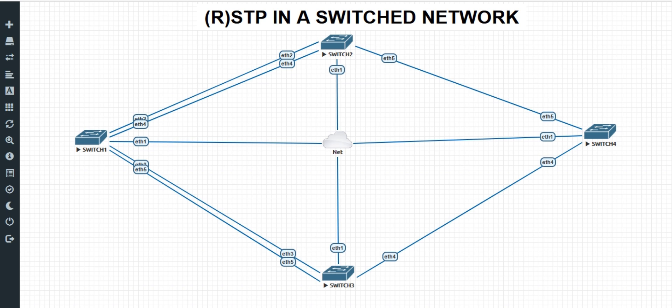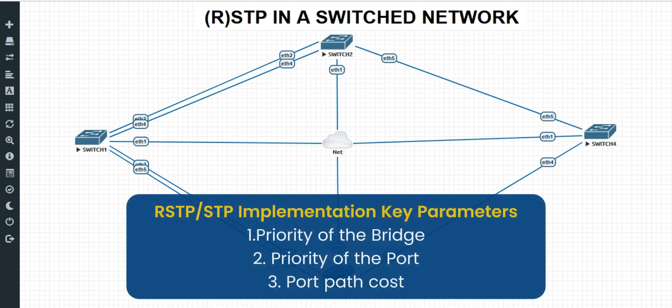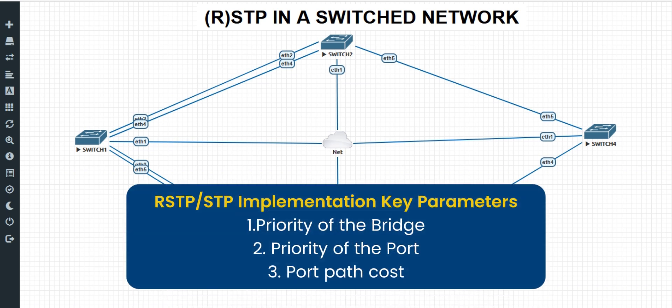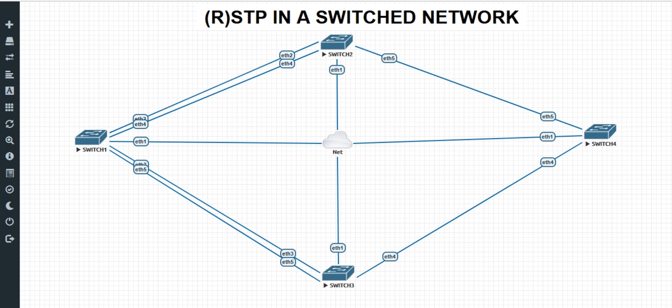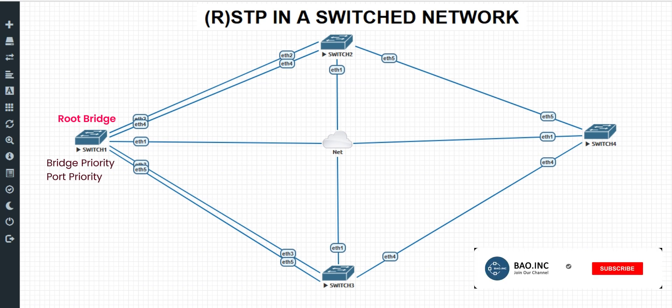To implement either RSTP or STP on your network, you have to choose a root bridge. There are three parameters to familiarize yourself with when implementing this protocol in a switched network: the bridge priority, the priority of the ports, and the port path cost. Switch one will be our root bridge, and the main configurations on the root bridge are bridge priority and port priority.